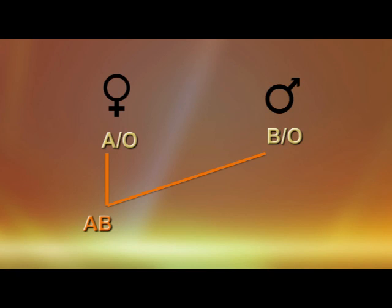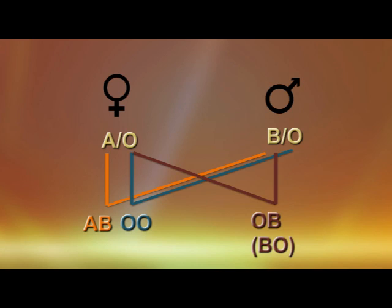If a parent passes an O gene and the other parent also passes the O gene, the child will be OO. If the parent passes a group O and a group B, the child will be a group B. And finally, if A and O are passed down, the baby will be group A.